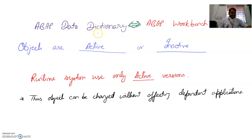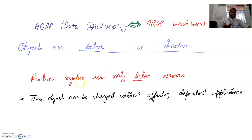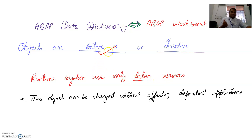The ABAP Dictionary is compatible with the ABAP Workbench, so all tools in the workbench can use the underlying database — you can modify, change, append, or create anything. Importantly, you can keep objects active or inactive. The runtime system uses only active versions. So if you have 10 objects and don't need three of them, keep those three inactive and the seven active ones will be used in the application.